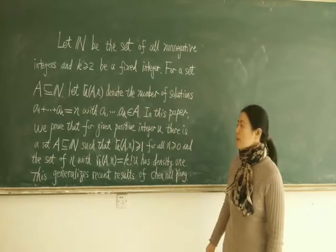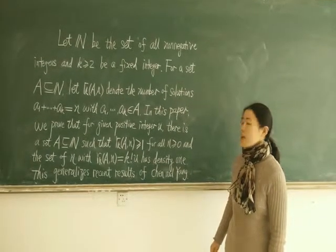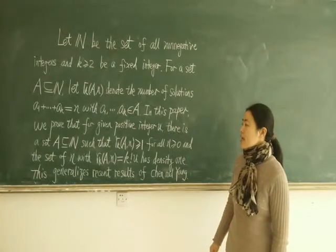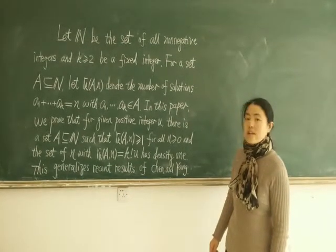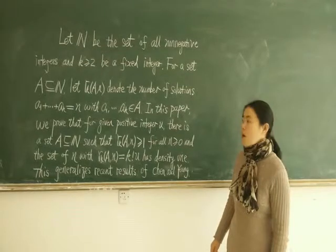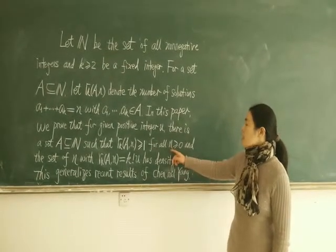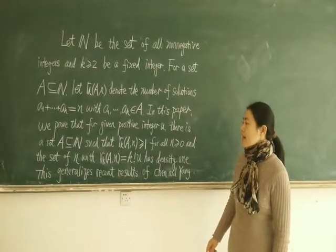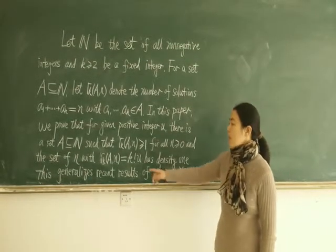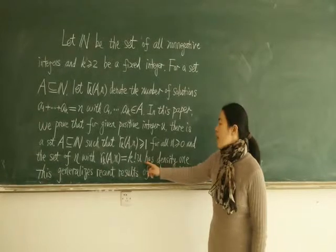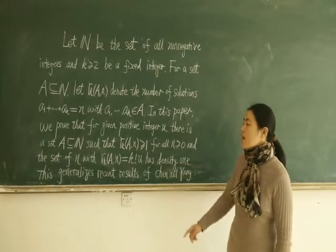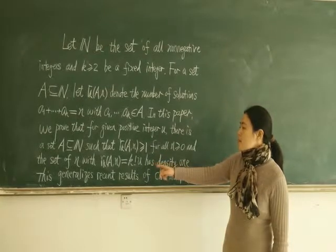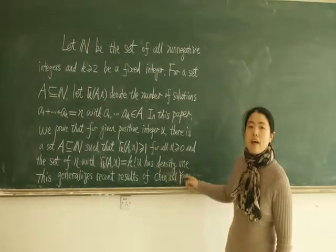We prove that for a given positive integer U, there is a set A such that RK(A, N) is greater than 1 for all non-negative integers N, and the set of N with RK(A, N) equal to K factorial times U has density 1. These results generalize recent results of [10] and beyond.